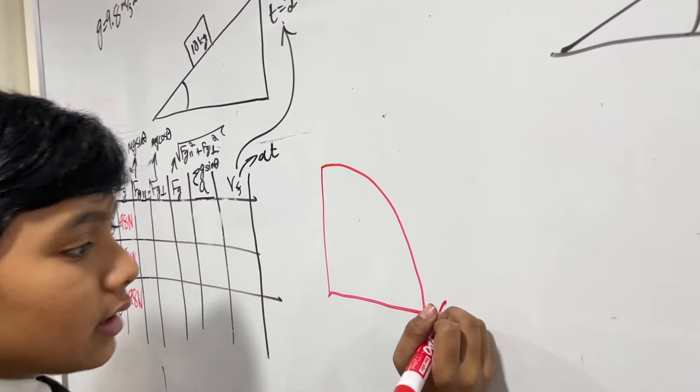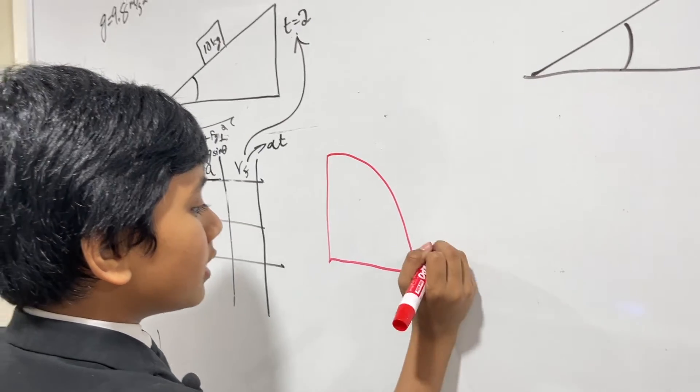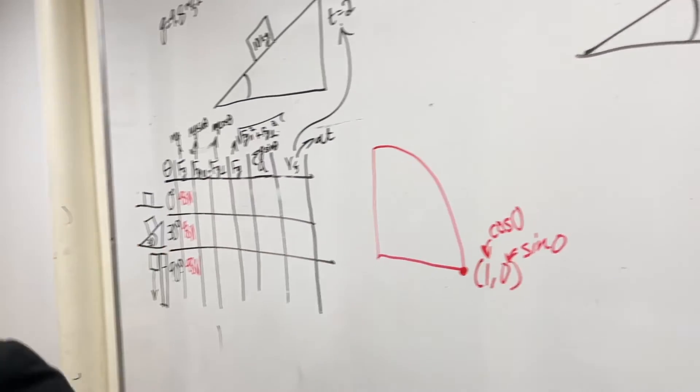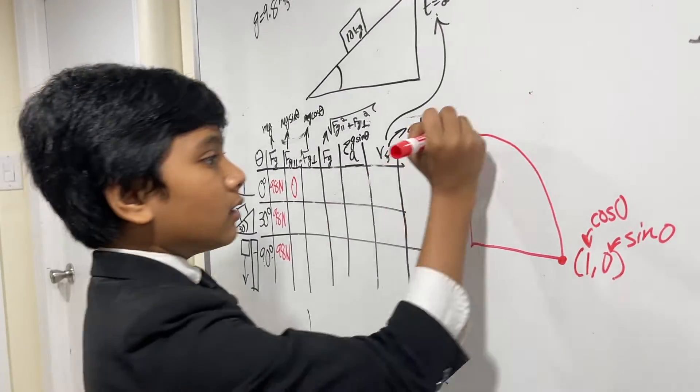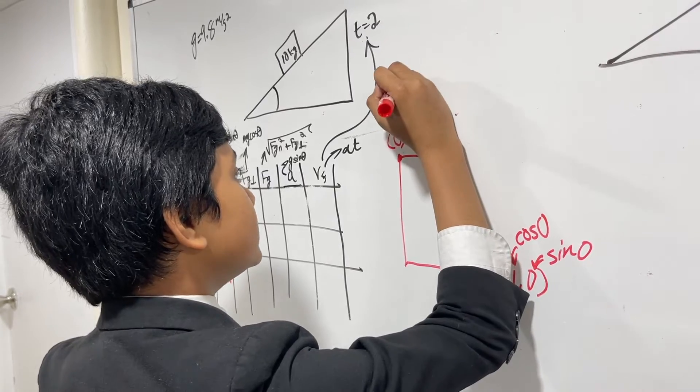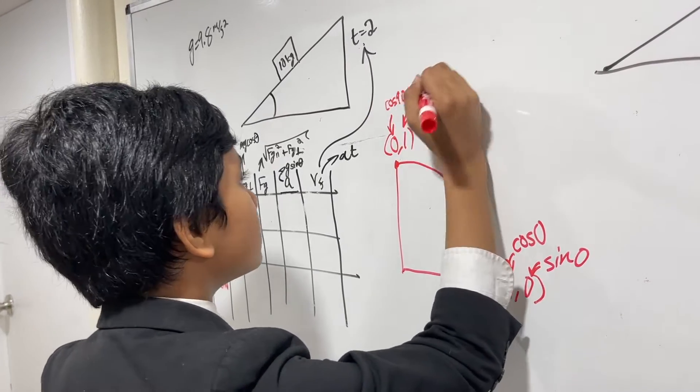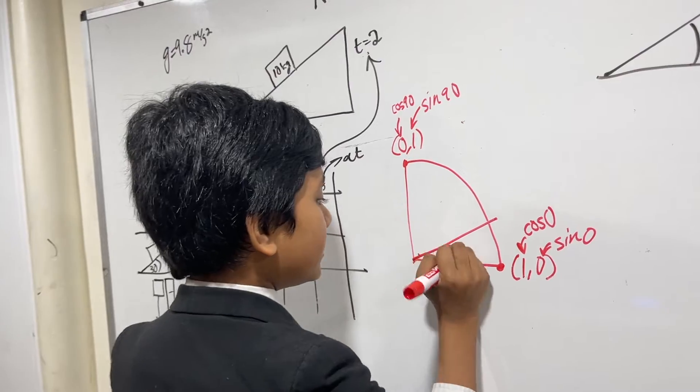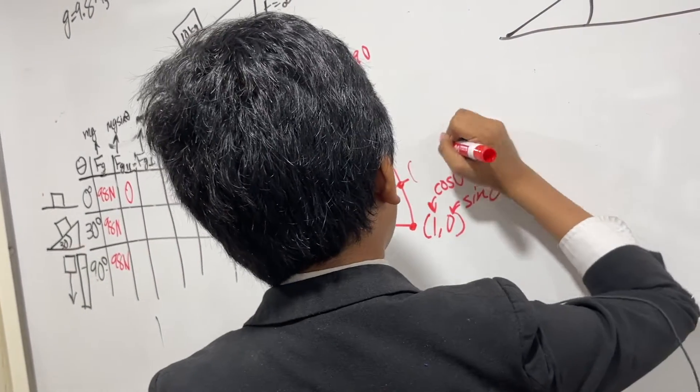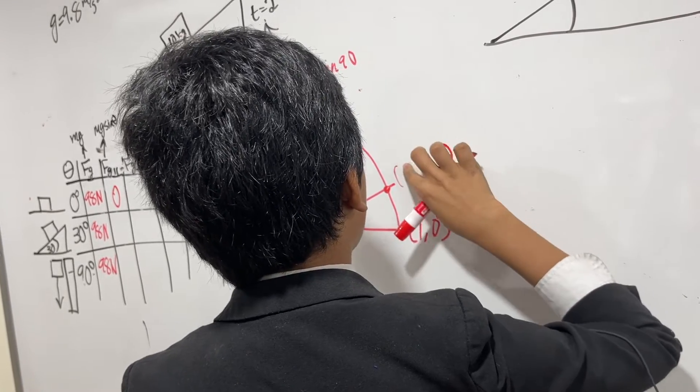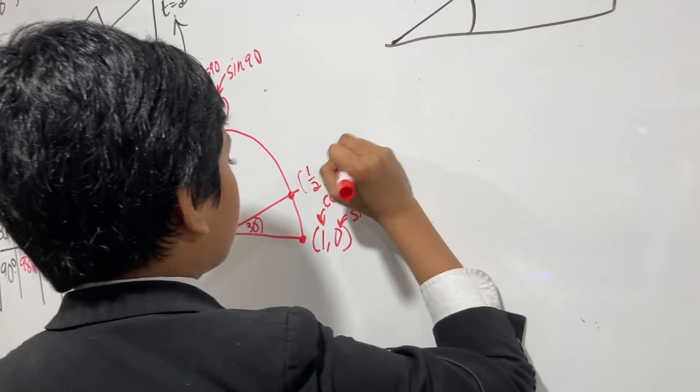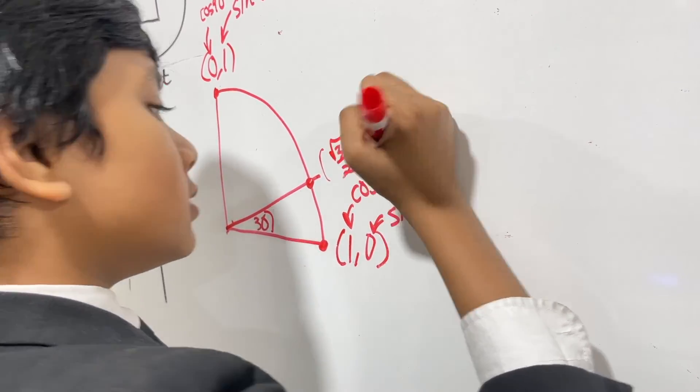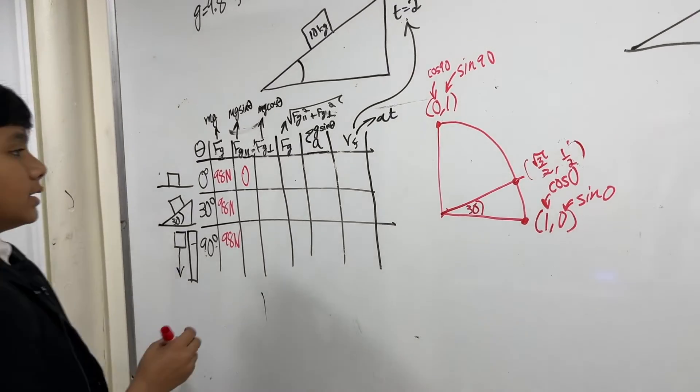So what is this one? Well, this is 1, 0. This is cosine 0 and this is sine 0. So we know that sine 0 is 0. And what about sine 90? Well, this point is 0, 1, isn't it? So cosine 90 is 0, and sine 90 is 1. And obviously, 30 degrees is somewhere in between. I believe this is root 3 over 2, comma, 1 half. No, it's the other way around. I'm stupid. Okay, so that's all noted down now.